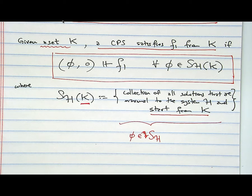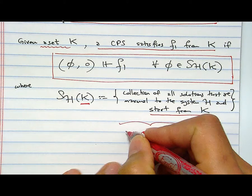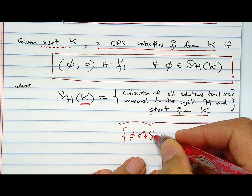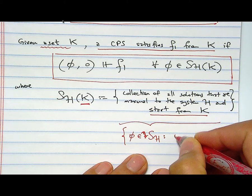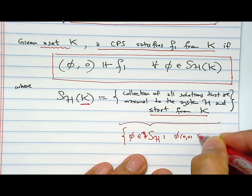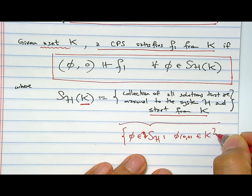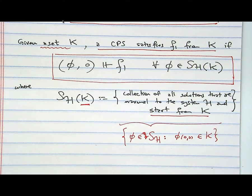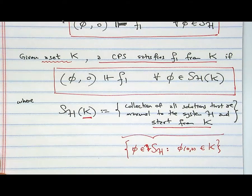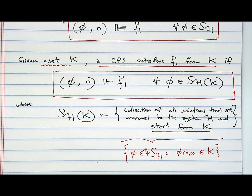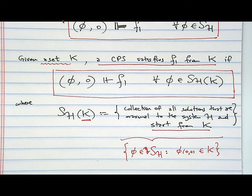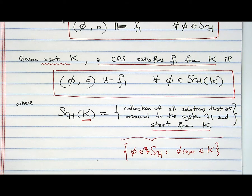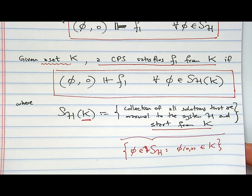Let me clarify what I was trying to write here: this will collect all solutions φ to the system such that the initial condition is in K. That's what this says in words. Anyhow, how do we check this? That's the question to try to answer.